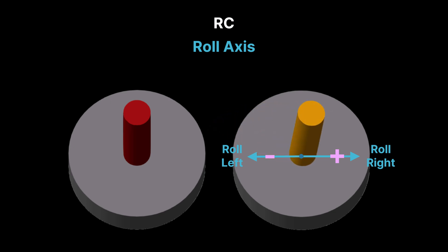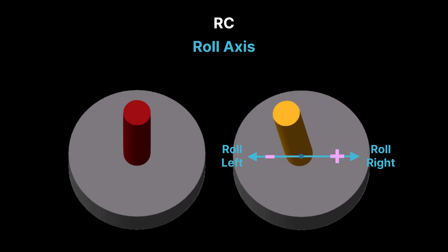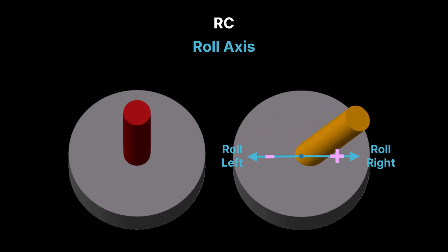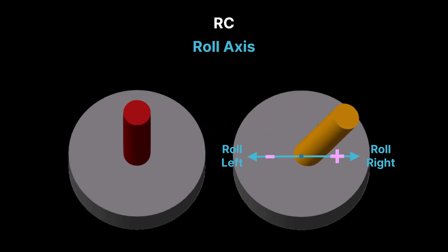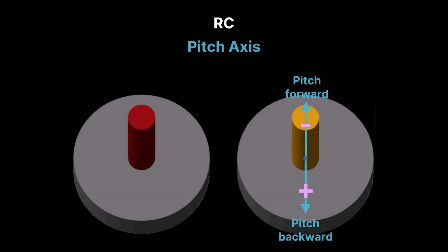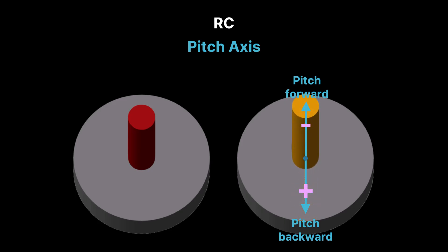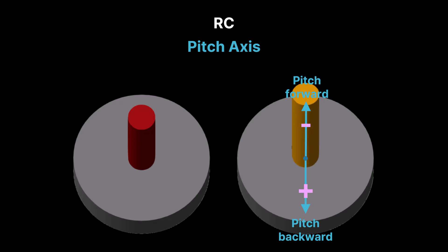Most RC transmitters have two sticks, each responsible for different movement axes. The right stick controls the drone's roll, tilting it sideways to move left or right. Moving the stick right moves the drone right, while moving left moves it left. The right stick also controls the drone's pitch, tilting it forward or backward. Pushing forward moves the drone forward, while pulling back moves it backward.